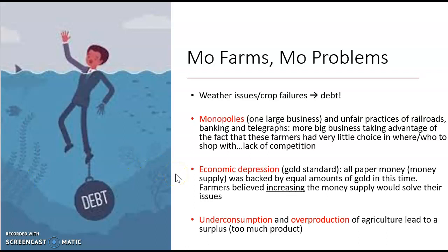Throughout the 1860s and 1870s, you're going to see things like weather issues — drought, tornadoes — crop failures, and a boll weevil, which is a type of insect that causes plagues of locusts. All of these things, decades and decades on top of each other, lead to debt. The thing about farming that's different than other businesses is you have to put all your money up front. If you're growing corn or wheat, that crop has to come in — you take all that debt up front and hope the crop comes in. Weather problems could mean you lose fields and fields of acreage.